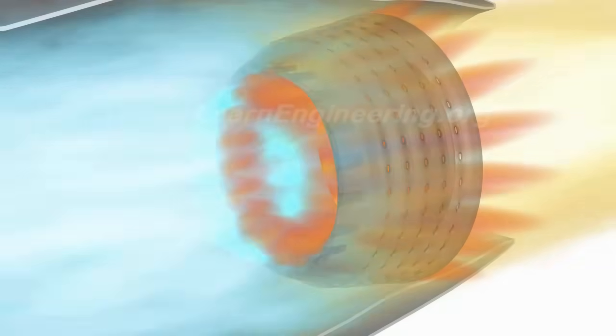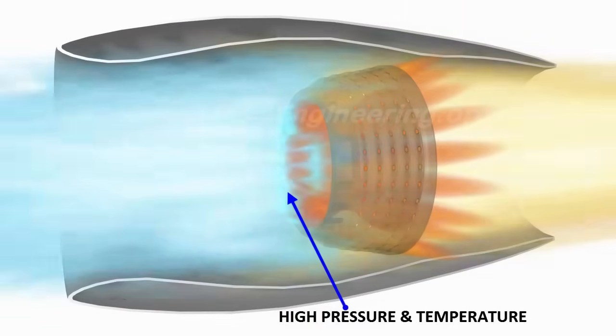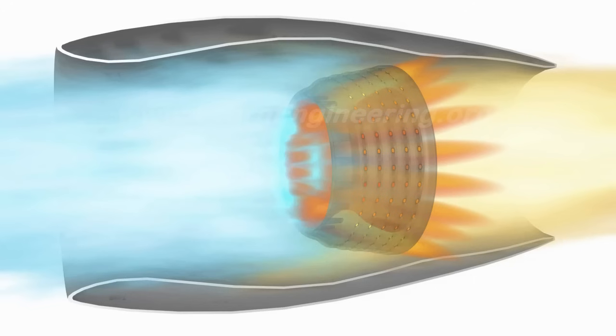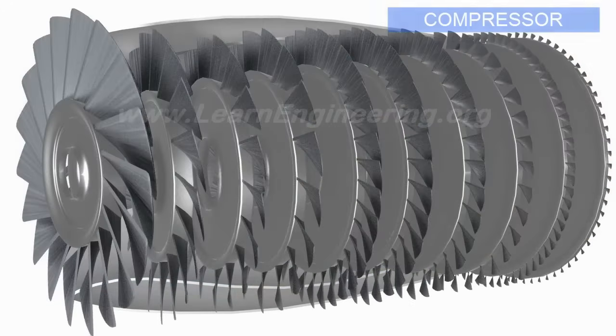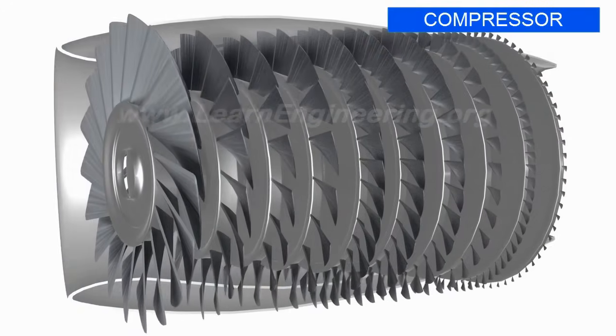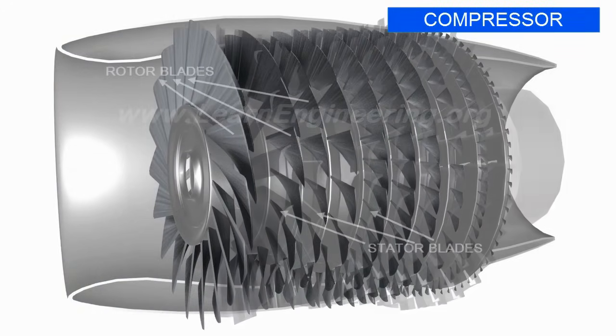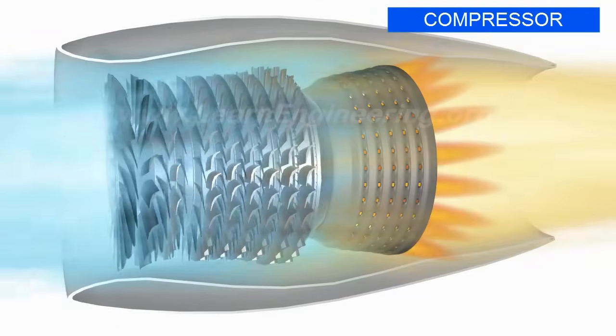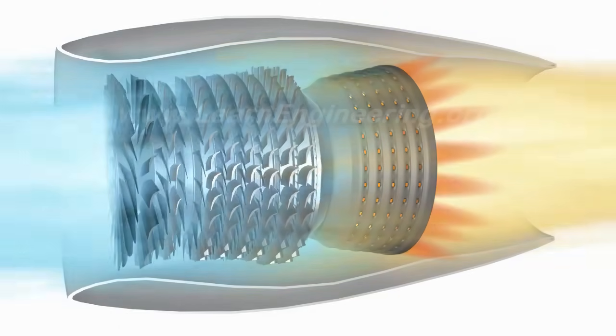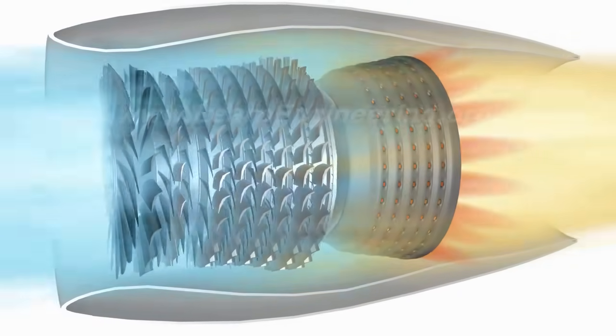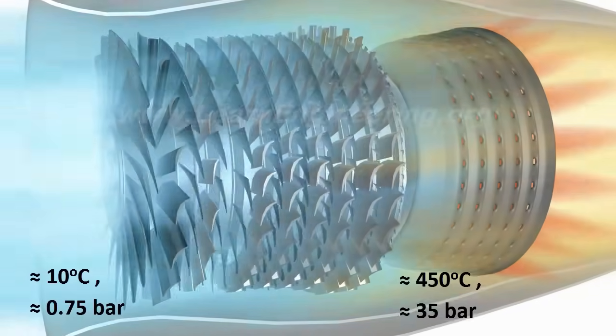Effective combustion requires air to be at moderately high temperature and pressure. To bring the air to this condition, a set of compressor stages are used. The rotating blades of the compressor add energy to the fluid and its temperature and pressure rise to a level suitable to sustain combustion.